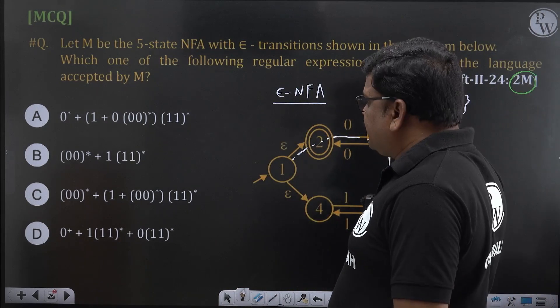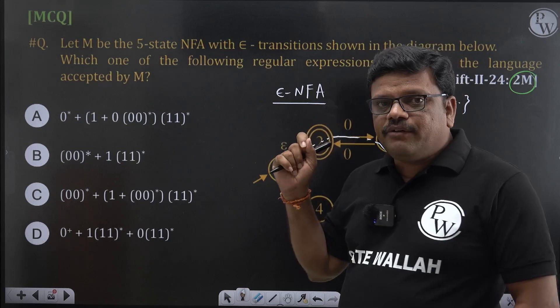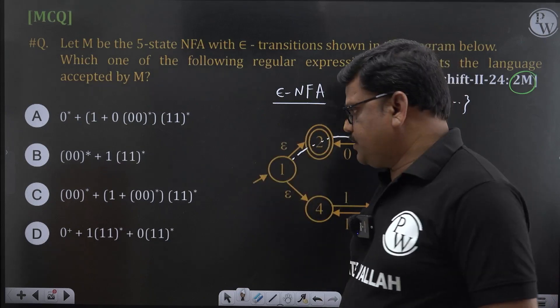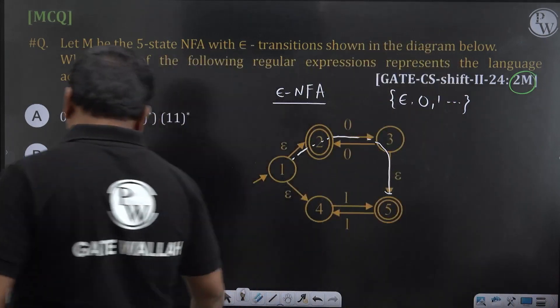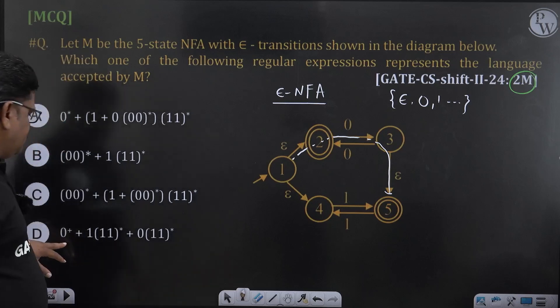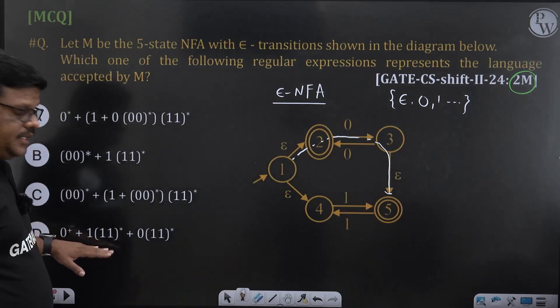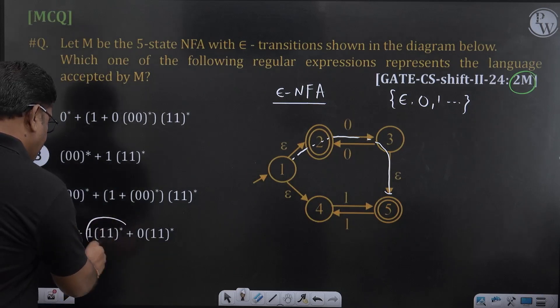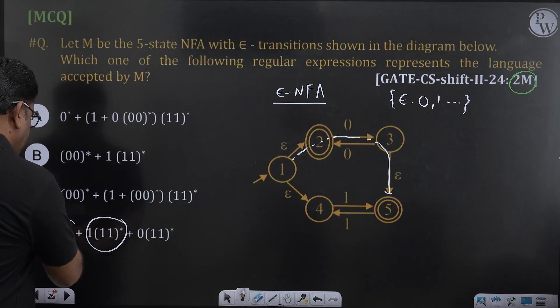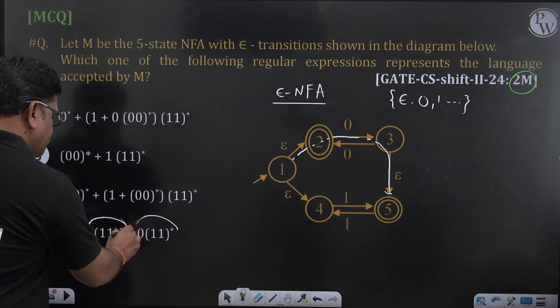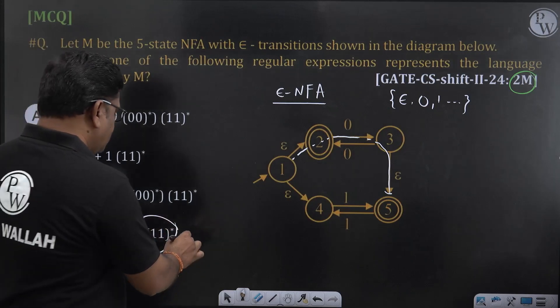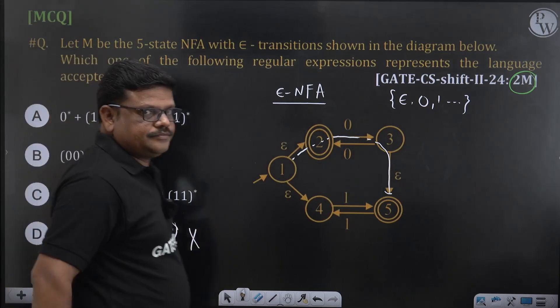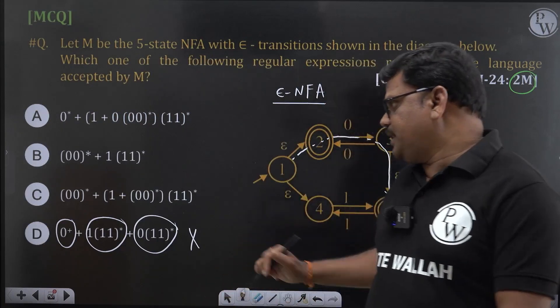Now, it is accepting epsilon. Wherever epsilon is not there, eliminate that option. Look at the option D here. Can we generate any epsilon? This is 0 plus, from here not possible. Minimum string is from this, from this minimum string is 1, from this minimum string is 0, from this minimum string is 0. Epsilon is not there, we can eliminate this option. We can eliminate the option D here.